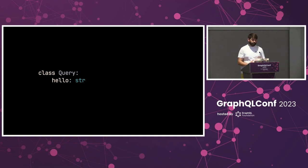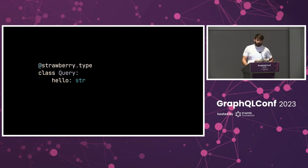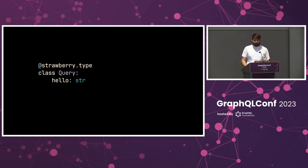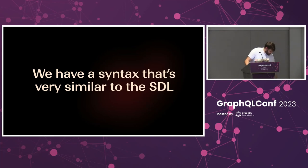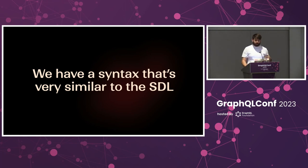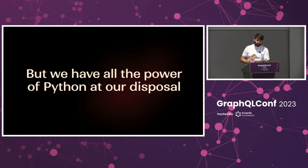You can also use the strawberry.field decorator to attach a resolver to this class. Now we have a fully functional object type that can also resolve its fields. The syntax feels very similar to the SDL — it's easy to translate between SDL and Python because we're using language features to define GraphQL types, while also having all the power of Python at our disposal.